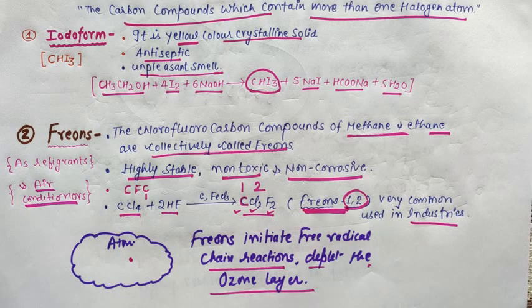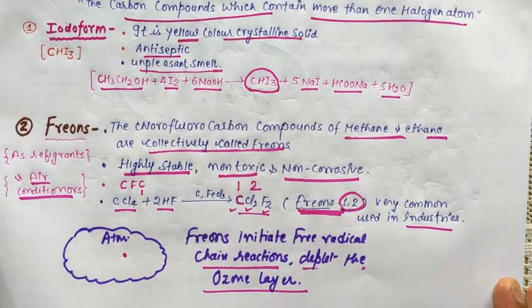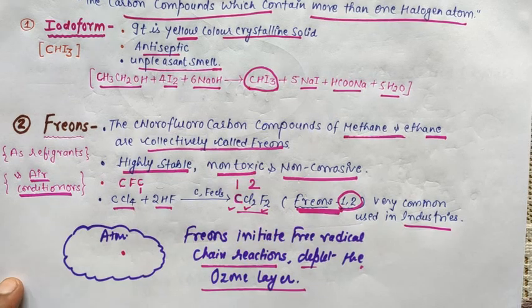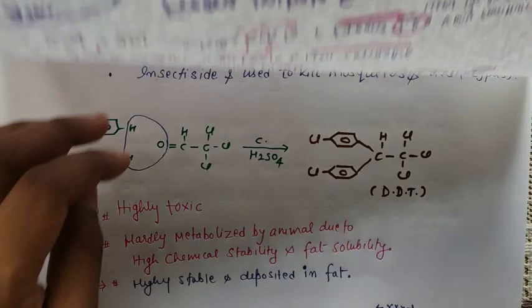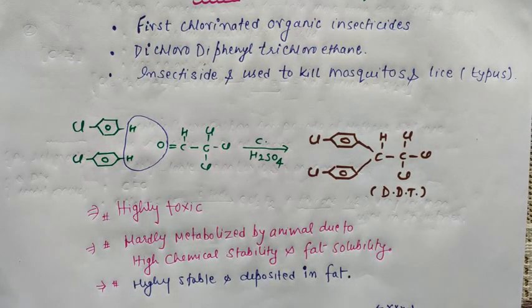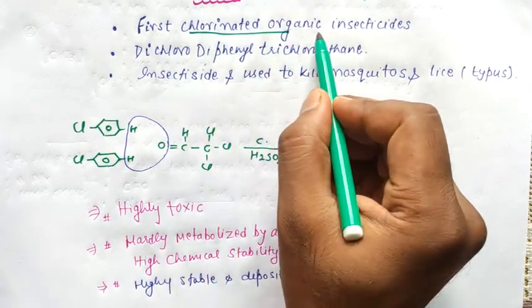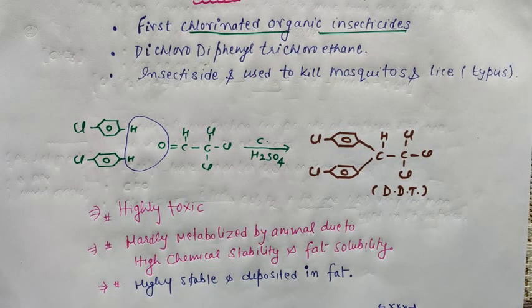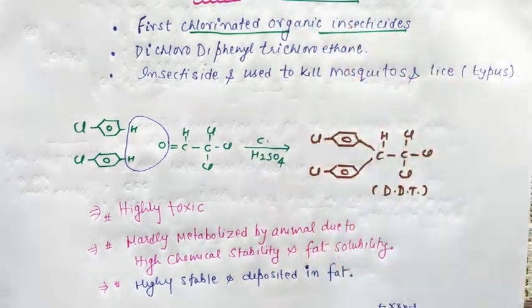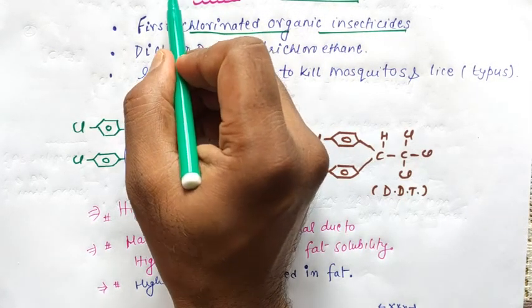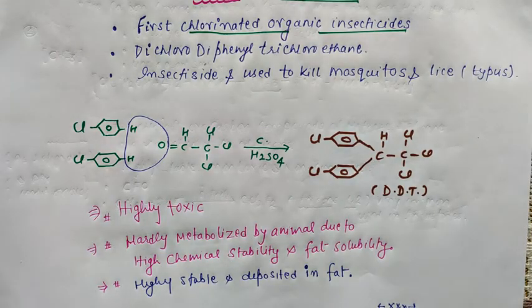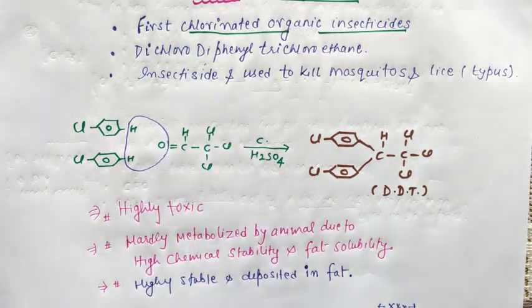The last polyhalogen compound, very important for our exam point of view, is DDT. This is the first chlorinated organic insecticide, discovered by Paul Mueller. Paul Mueller got the Nobel Prize. This is very important.